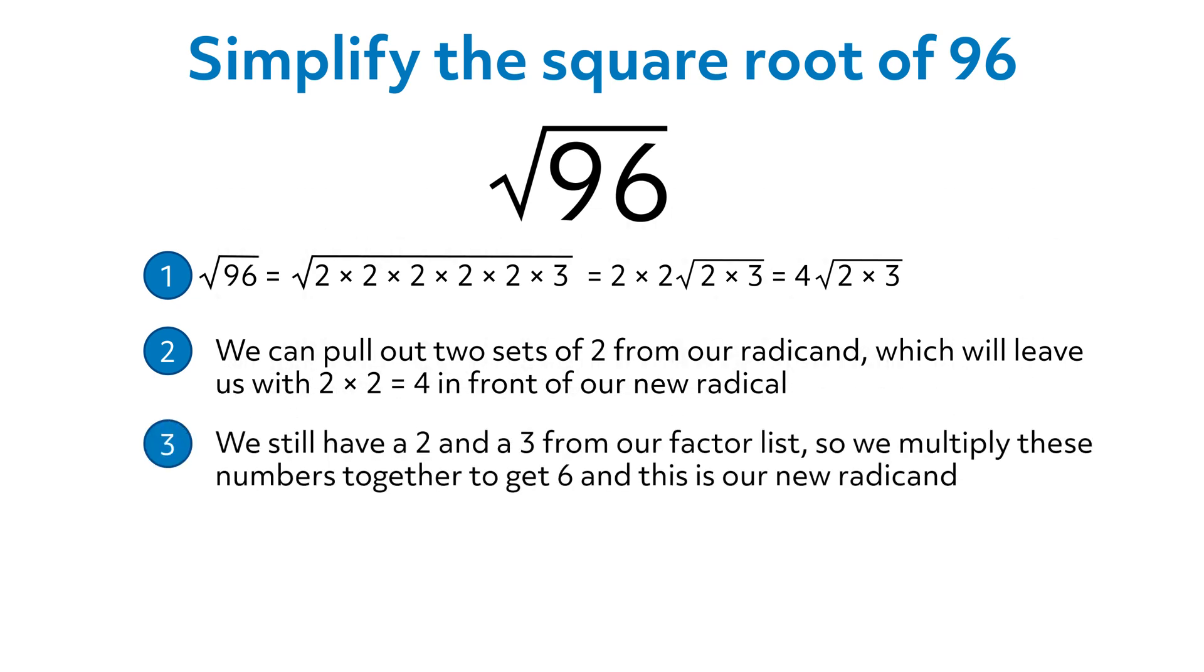We still have a 2 and a 3 from our factor list, so we multiply these numbers together to get 6, and this is our new radicand. Therefore, the most simplified form of the square root of 96 is 4 square root of 6.